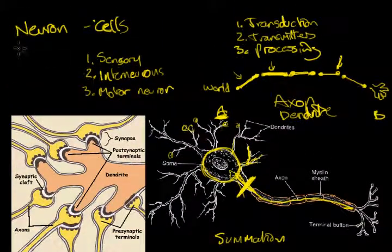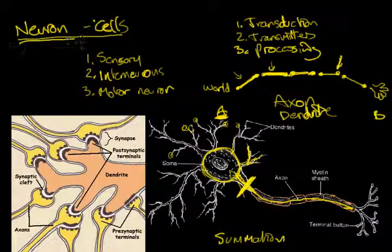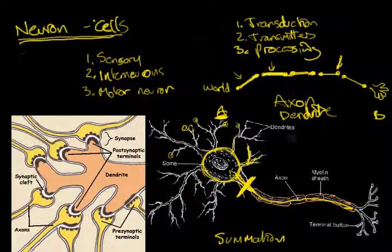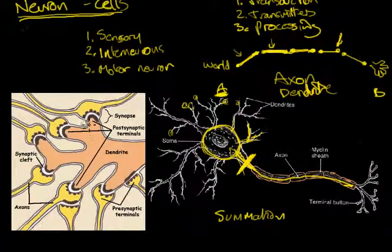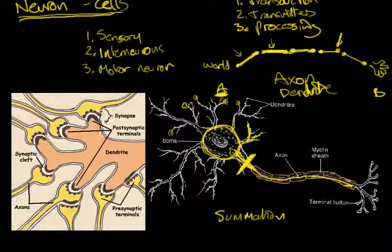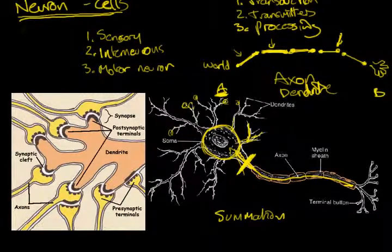So hopefully this has just given you some idea about what neurons are as cells specialized to transmit information. In the next video we'll look at the action potential and at synapses, how those signals are produced at an atomic level. This is what we find with neurons as we get down to the atomic level.